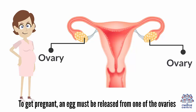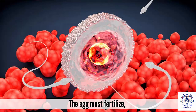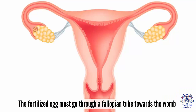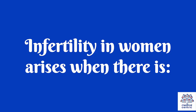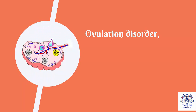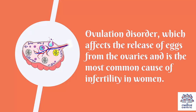In women: To get pregnant, an egg must be released from one of the ovaries, the egg must be fertilized, and the fertilized egg must travel through a fallopian tube towards the womb and attach to the inside of the uterus. Infertility in women most commonly arises from an ovulation disorder, which affects the release of eggs from the ovaries.